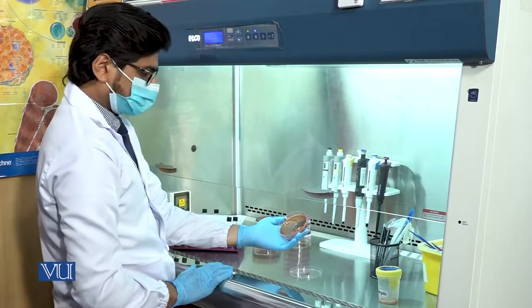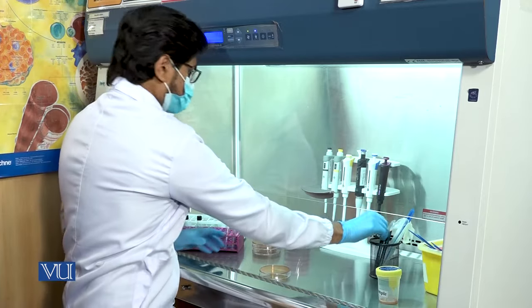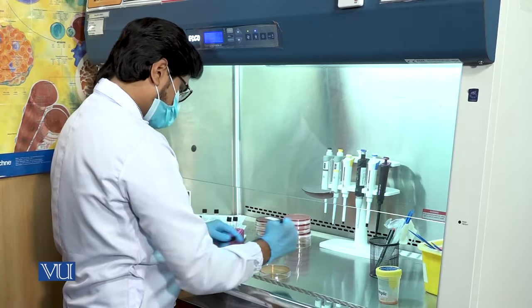Discard the disposable loop after use. Place the plate in inverted position on the plate cover and label the details accordingly.